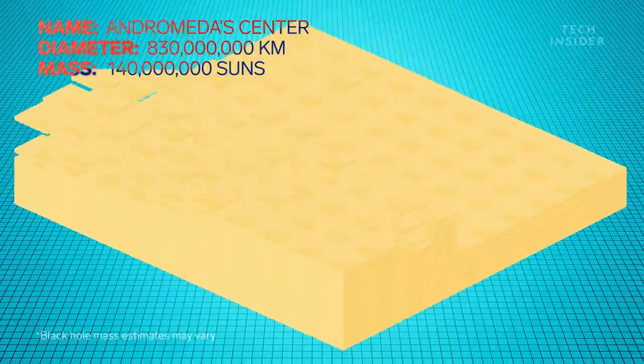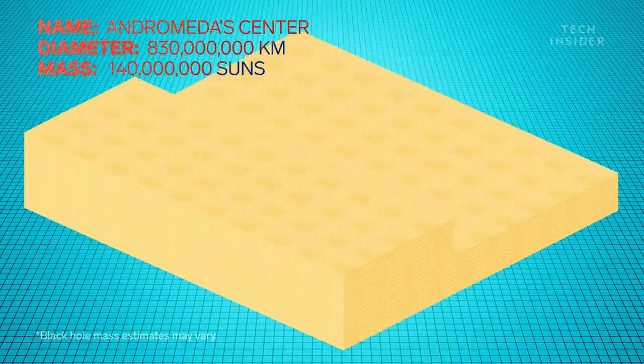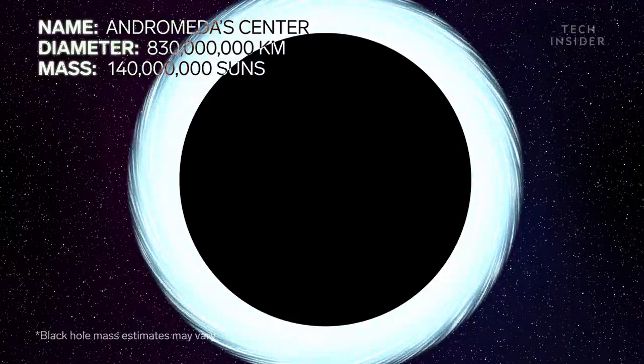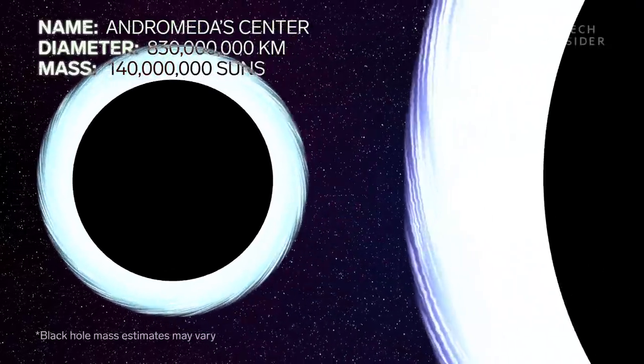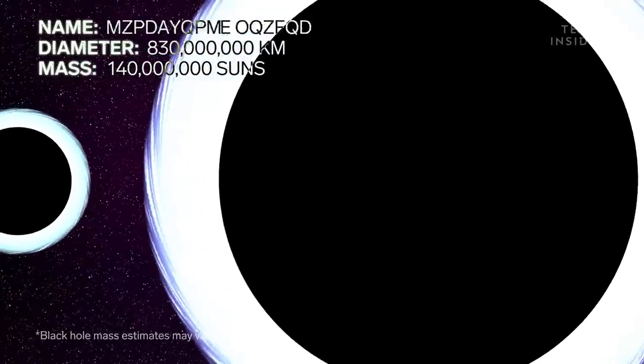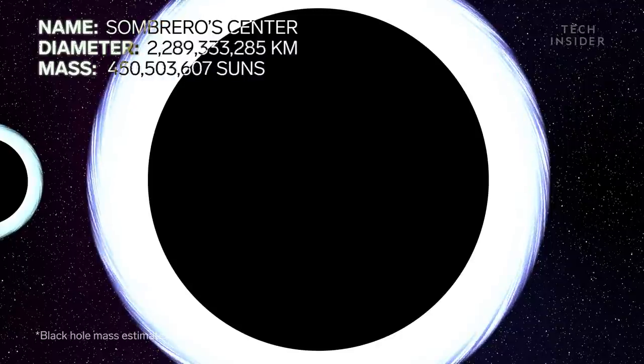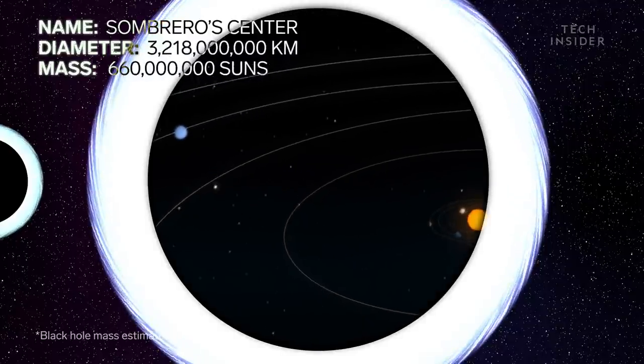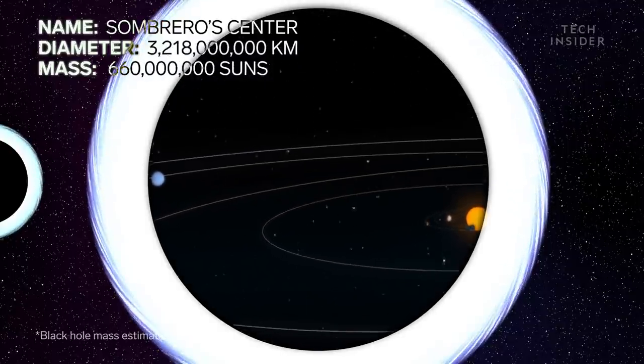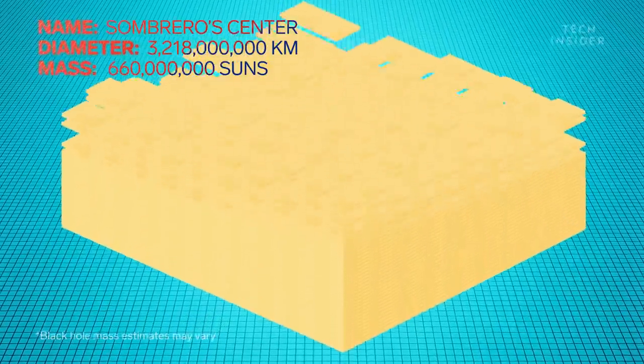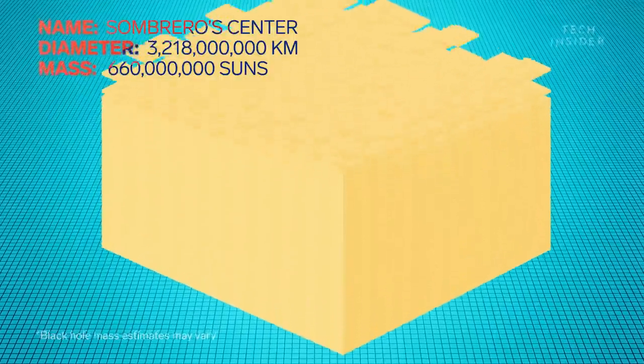We're finally getting to some of the largest black holes in the universe. And yet, we haven't reached one that surpasses the size of our solar system. So let's look at the supermassive black hole at the center of the Sombrero galaxy. It measures 2 billion miles across. So it would stretch further than Uranus's orbit. And it has about the same mass as 660 million suns.